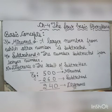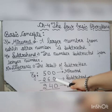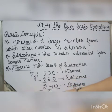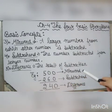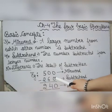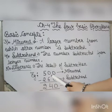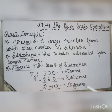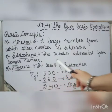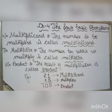In the example 500 minus 260 equals 240: 500 is the larger number, so 500 is the minuend. 260 is being subtracted from 500, so 260 is the subtrahend. The result 240 is the difference, since difference is the result of subtraction.